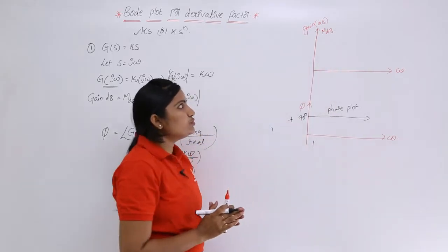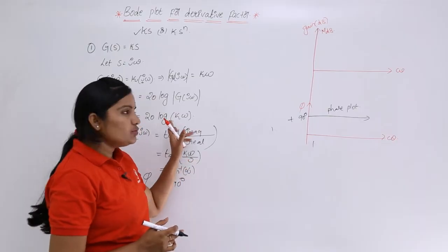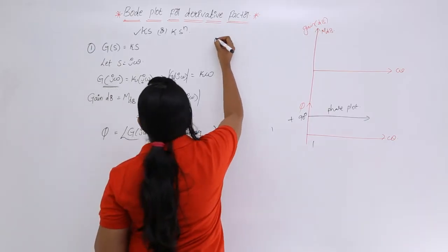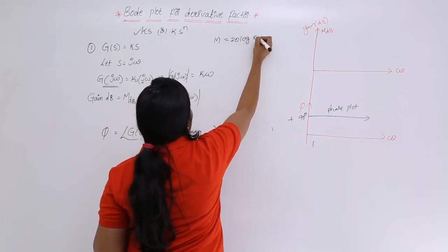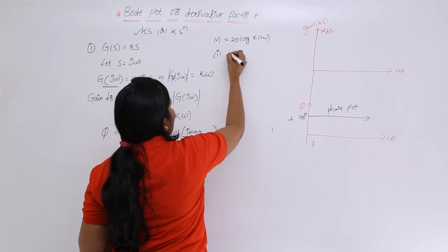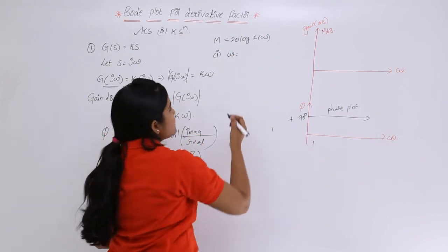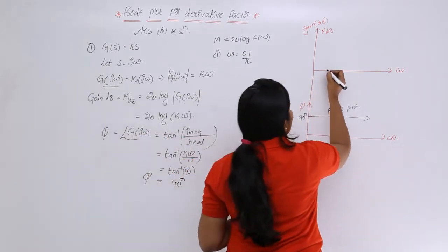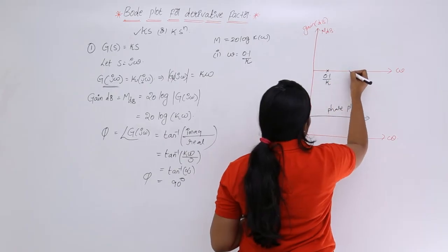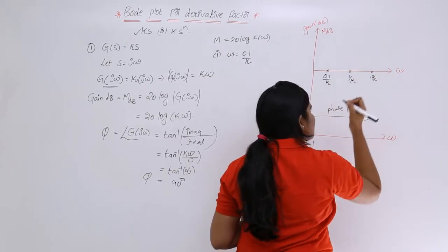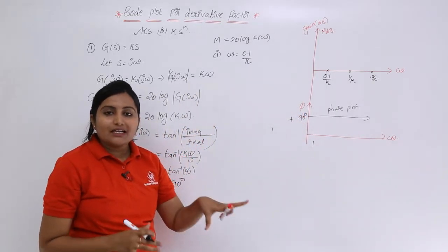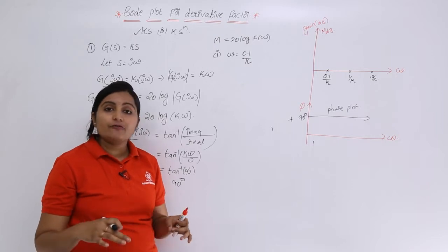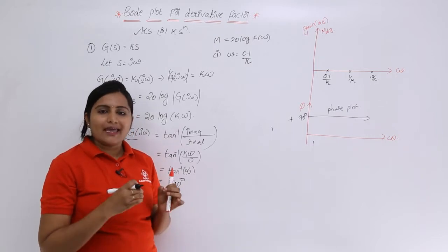Now for the magnitude plot, we need to vary the value of ω and calculate the magnitude values using M = 20 log(Kω). The points I am going to consider are ω = 0.1/K, ω = 1/K, and ω = 10/K. The last step in drawing the Bode plot is to vary ω from minimum to maximum and calculate the corresponding magnitude values.